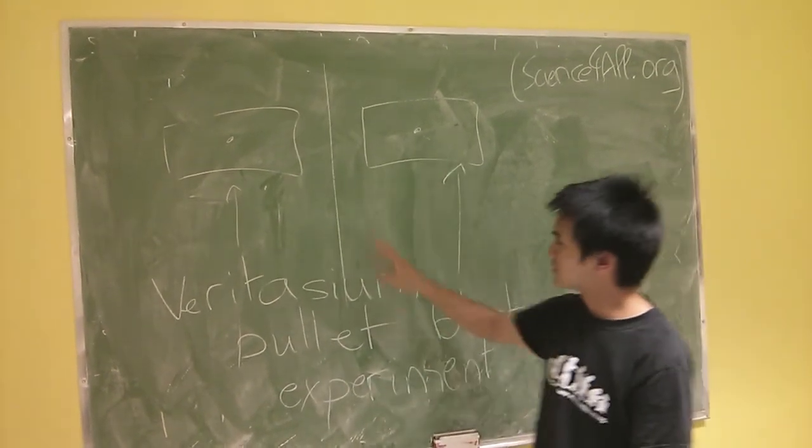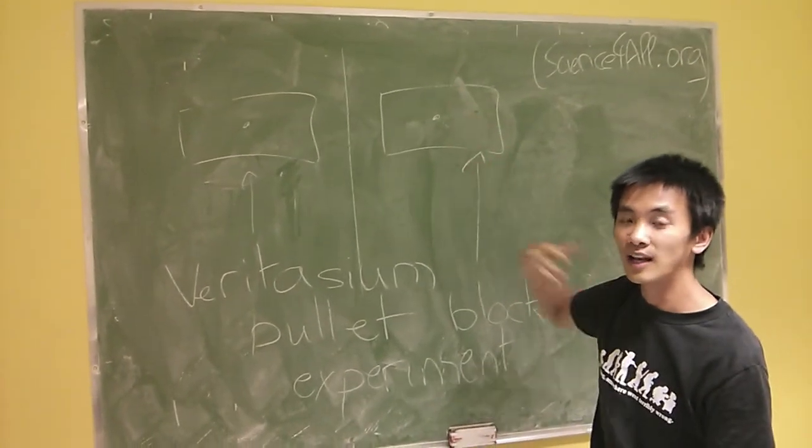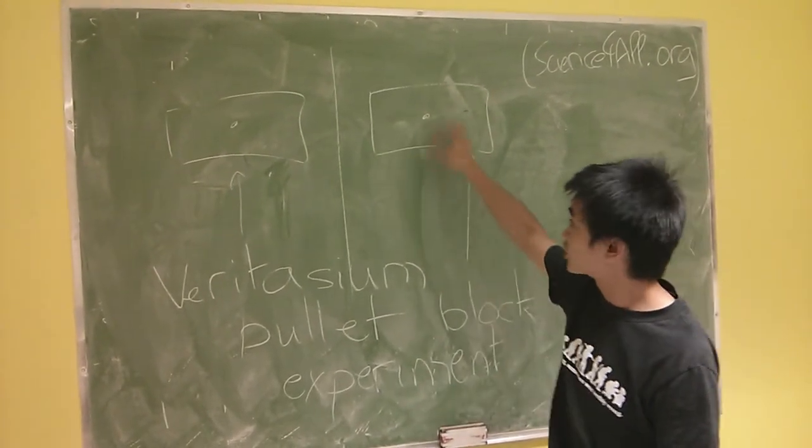Now, if in the second case the bullet has more kinetic energy, it means that there was less energy used in destroying the block. Why would the material be more destroyed in the first case than in the second?